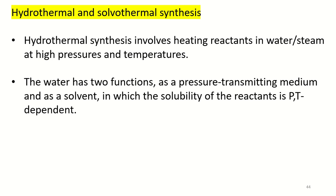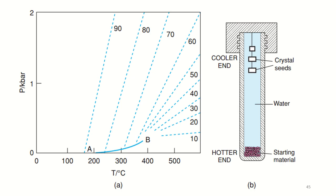Pressure is controlled either externally or by the degree of filling in a sealed bomb, using PT phase diagrams. In figure A, curve AB is the saturated steam curve, separating liquid water above from steam below. At temperatures above 374°C, point B, water reaches a supercritical condition where there is no distinction between liquid and vapor states.